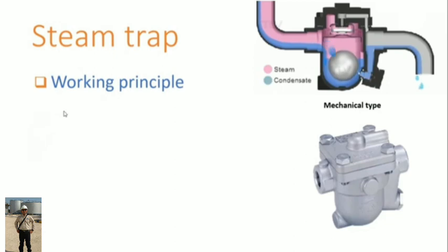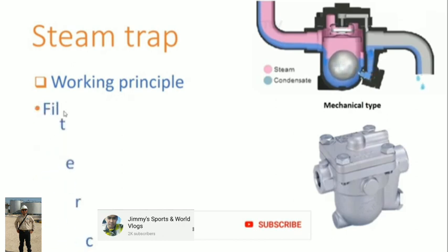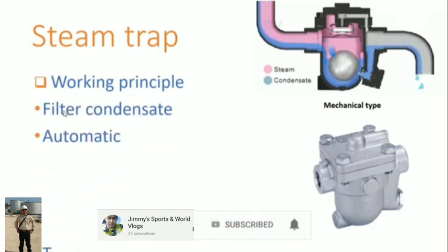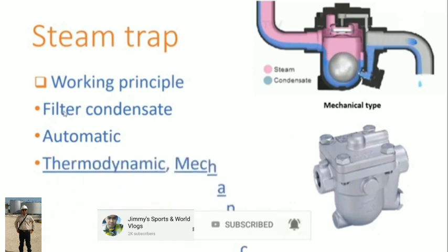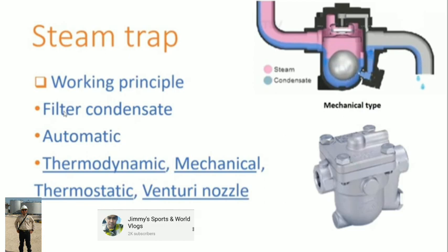Steam trap working principle. It is a device used to filter out the condensate from the system to ensure regular flowing in the system. When the condensate occurs, steam trap works automatically. Mainly there are four steam traps: thermodynamic, mechanical, thermostatic, and venturi nozzle.